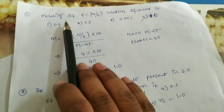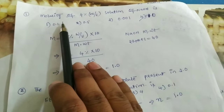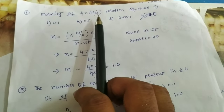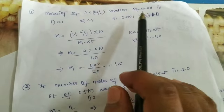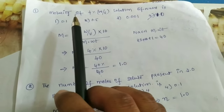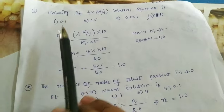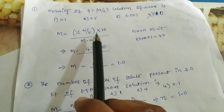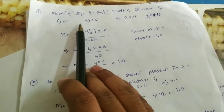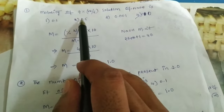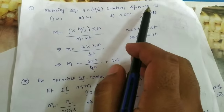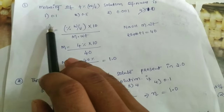Hi dear students. This is a molarity problem: find the molarity of a 4% weight by volume solution of NaOH. The formula for molarity using percentage weight by volume is: M = (% w/v × 10) / molecular weight.